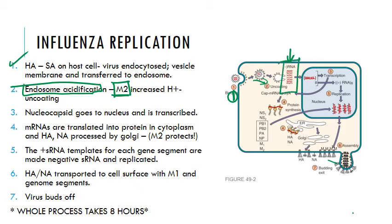Here is where the RNA virus stops behaving like an RNA virus and starts behaving like a DNA virus. The nucleocapsids are shuttled into the nucleus where they are transcribed into mRNA using the transcriptases PA, PB1, and PB2. The virus uses the host cell mRNA as a primer for viral mRNA synthesis, stealing the methylated cap region of host mRNA so that later they can bind host ribosomes effectively and use them for translation.